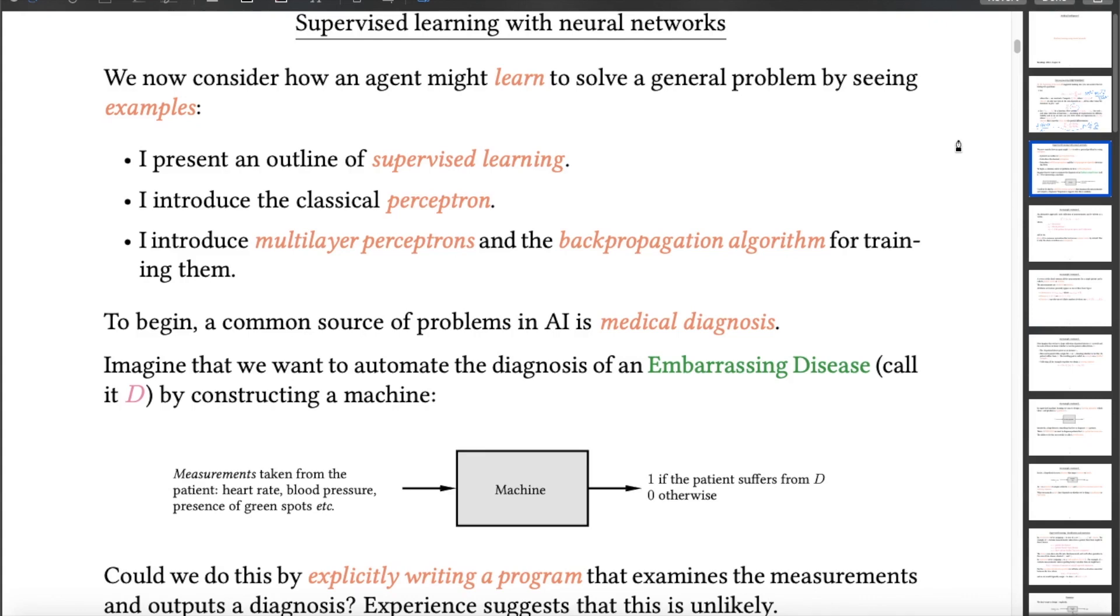So having got that out of the way, I'm only going to talk in this course about supervised learning. There are other kinds, which I will mention just for completeness, but I'm only going to look in any detail at all about supervised learning. And there are various things that any good computer scientist should know about machine learning. And one of those is that they should know about the perceptron, and the other is that they should know about multi-layer perceptrons and the backpropagation algorithm for training them. So these are the things that I'm going to talk about.